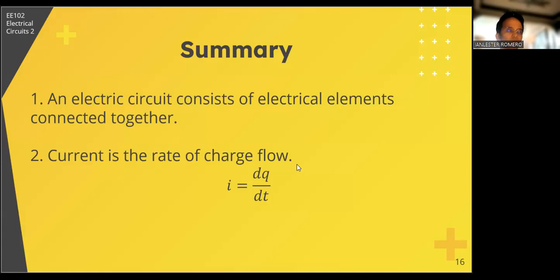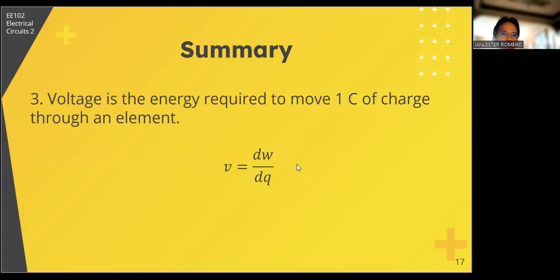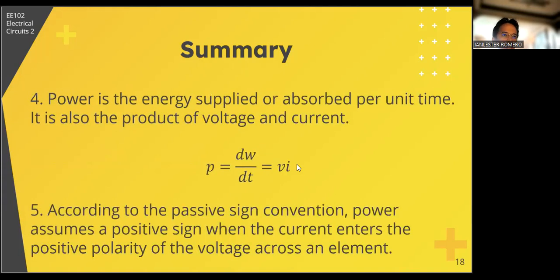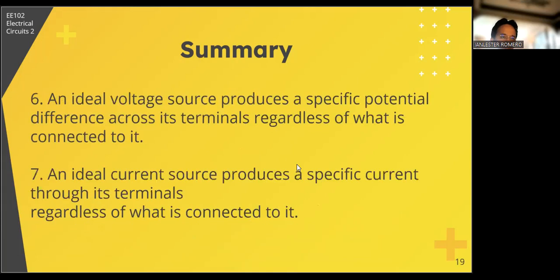Now come to our summary. So far, we talked about these things. First, an electric circuit consists of electrical elements connected together. Second, current is the rate of charge flow, dq over dt. Voltage is the energy required to move one coulomb of charge through an element, the energy required per coulomb, dw over dq. Then, power is the energy supplied or absorbed per unit time. It is also the product of voltage and current. According to the passive sign convention, power assumes a positive sign when the current enters the positive polarity of the voltage across an element. So if it's the negative terminal, then negative is the power. Six, an ideal voltage source produces a specific potential difference, or that is, specific voltage, across its terminals regardless of what is connected to it.